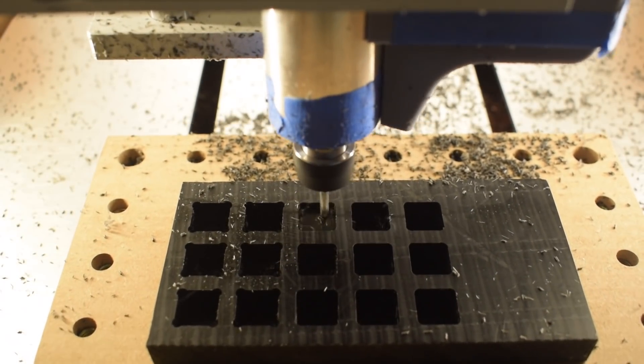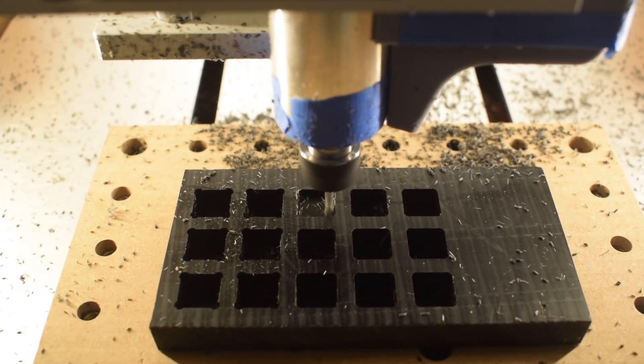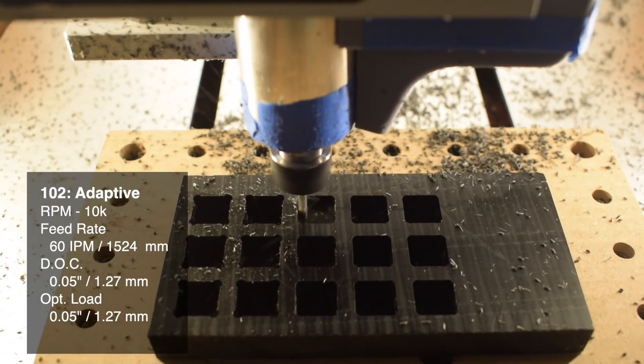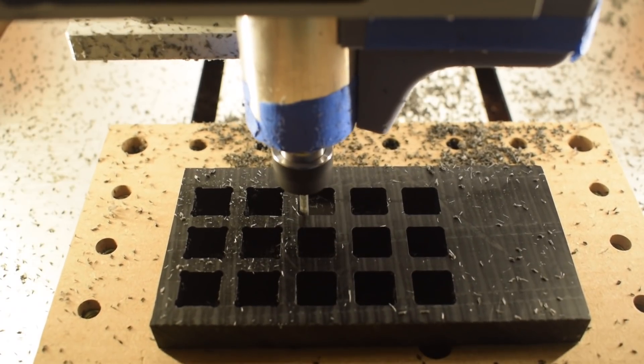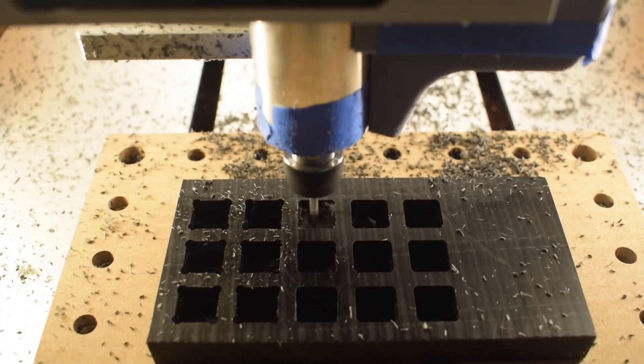If you want to do a better job of limiting your spindle load, you can opt for an adaptive toolpath. And here I'm using 10,000 RPM, 60 inches per minute, a 0.05 inch depth of cut with a matching 0.05 inch optimal load. This is a very comfortable speed, though you can be much more aggressive if you don't mind the machine sounding a little angrier.